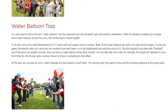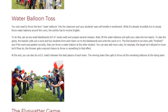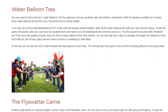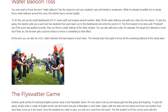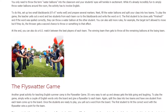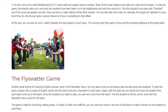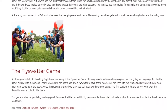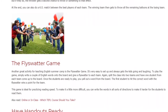To play the game, the teacher yells out a word and two students from each team run to the blackboards and write the word on it. The first student to finish yells 'finished,' and if the word was spelled correctly, they can throw a water balloon at the other student. You can also add more rules — for example, the target isn't allowed to move, but if they do, the thrower gets a second chance. At the end, you can also do a KO match between the best players of each team, and the winning team gets to throw all the remaining balloons at the losing team.